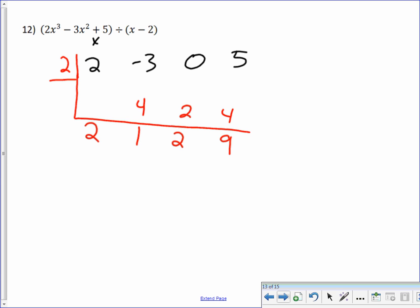Did I make any mistakes there? I don't think so. And so our final, now, this was cubed. This was to the first. So our answer is 2x squared plus x plus 2. And remember this last term is the reminder. So that's plus 9 over x minus 2.